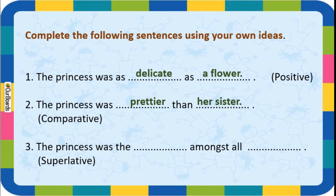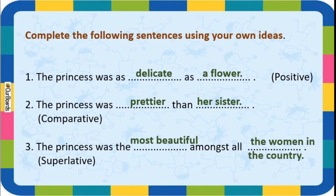'The princess was the most beautiful amongst all the women in the country' - the comparison is between the princess and all other women, so that is the superlative degree. To recall: positive is describing a thing; comparative means comparison between two things; and superlative means comparison between three or more things.